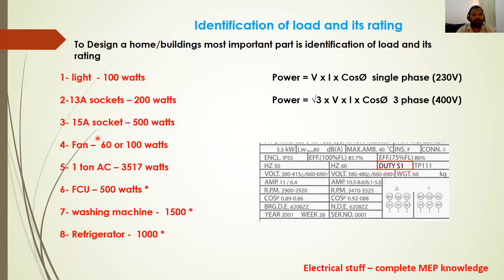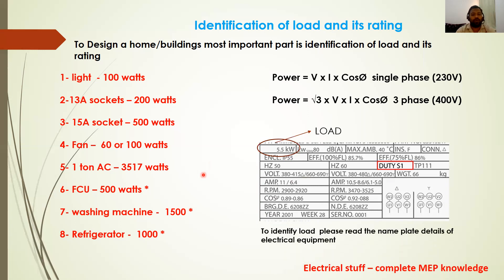To identify any load in your home, there is a nameplate on every appliance. For example, a nameplate showing 5.5 kilowatts tells you that is the load rating. This is how you can identify your loads.